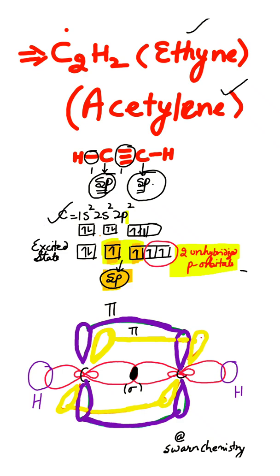That is 1s² 2s² 2p². In the excited state, one electron shifts to the empty P orbital. As the carbon is sp hybridized, there will be two unhybridized P orbitals left, which will